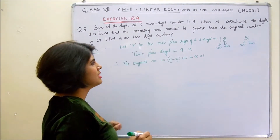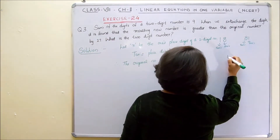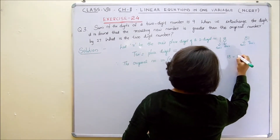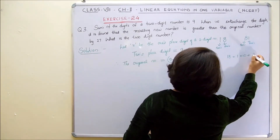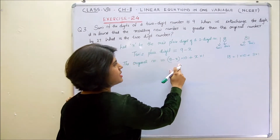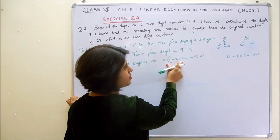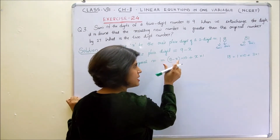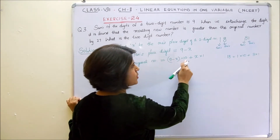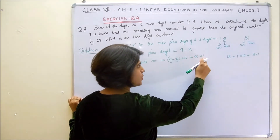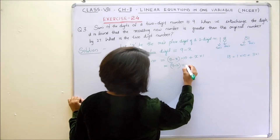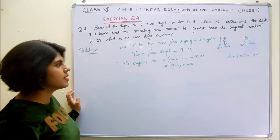Therefore the original number equals (9 minus x) into 10 plus x into 1. Just see the number 18 — its expanded form is 1 into 10 plus 8 into 1. In the same way, since 9 minus x is the tens digit, we write tens digit into 10 plus units digit into 1, which gives (9 minus x) into 10 plus x.